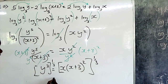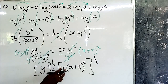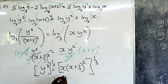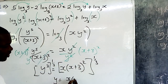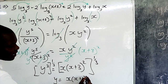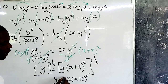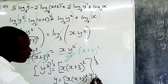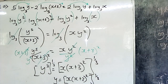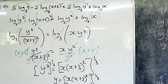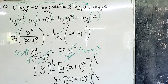So we remain with y equals x(x+3)², and the whole of that is raised to the power of one-third. Looking back, we have successfully written y in terms of x — we've made y the subject of the formula.